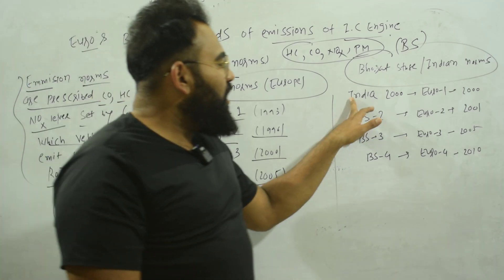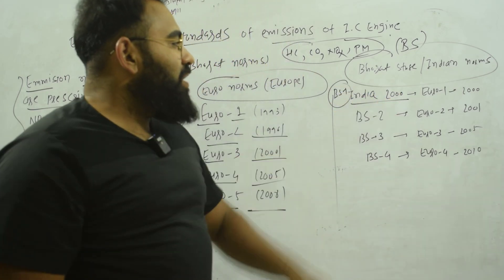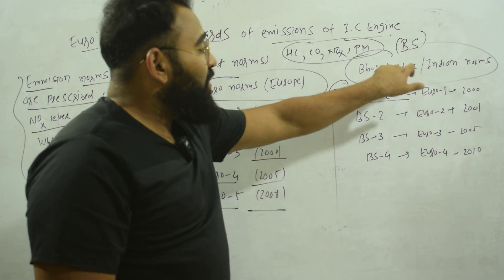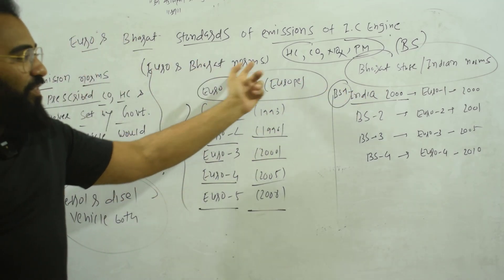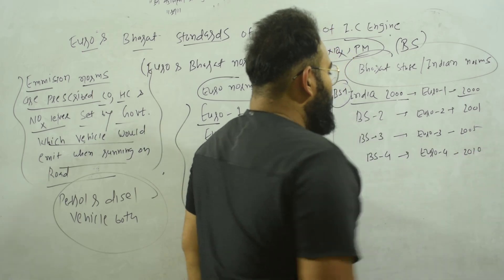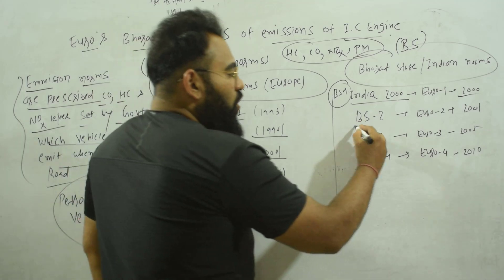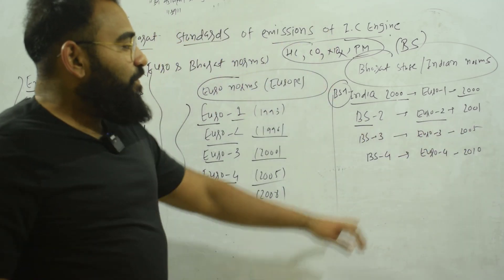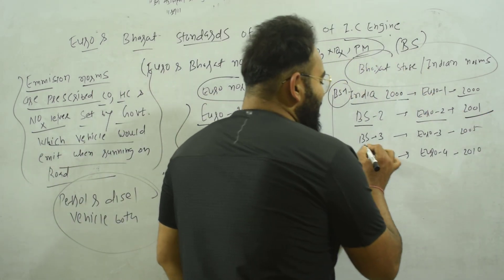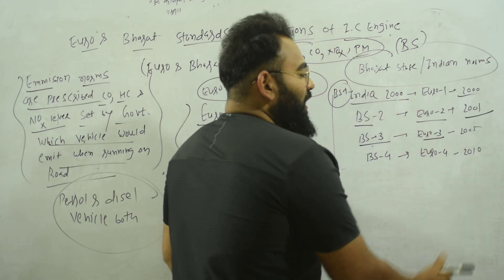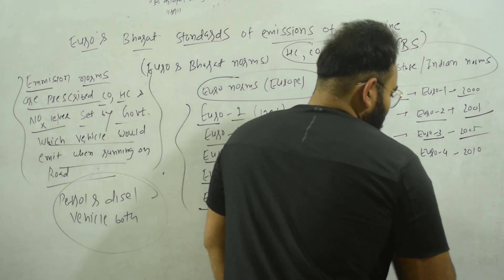India adopted Bharat Stage norms with reference to Euro norms. BS1 (Bharat Stage 1) was implemented in 2000 with reference to Euro 1. BS2 (Bharat Stage 2) was implemented in 2001 with reference to Euro 2. BS3 was implemented in 2005 with reference to Euro 3. BS4 was implemented with reference to Euro 4.